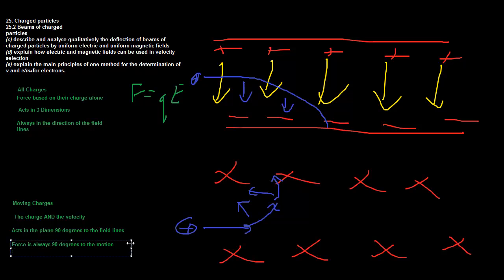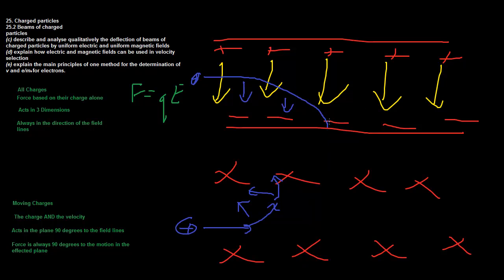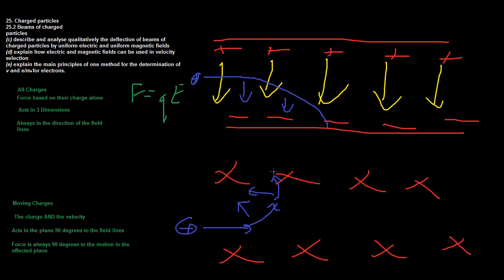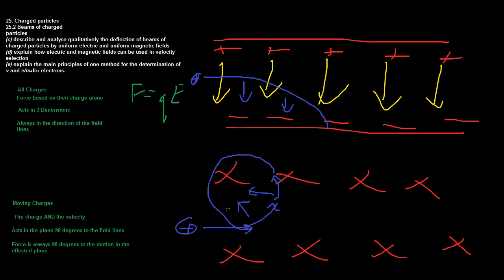In the electric field, force is always in the direction of the field lines. In the magnetic field, force is always 90 degrees to the motion in that effective plane. So a particle in the electric field follows a parabolic path - always accelerating in the field direction but retaining a horizontal component, never becoming a straight vertical line. A particle in the magnetic field moves in a circle, because the force direction keeps changing.